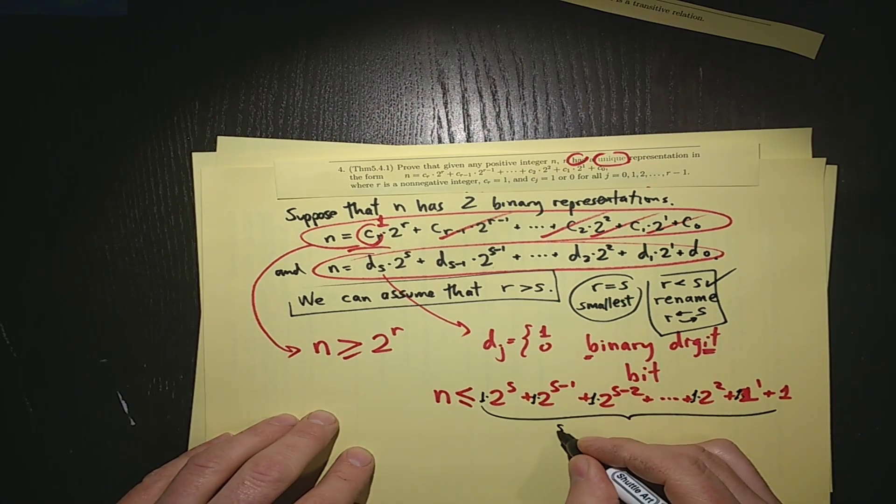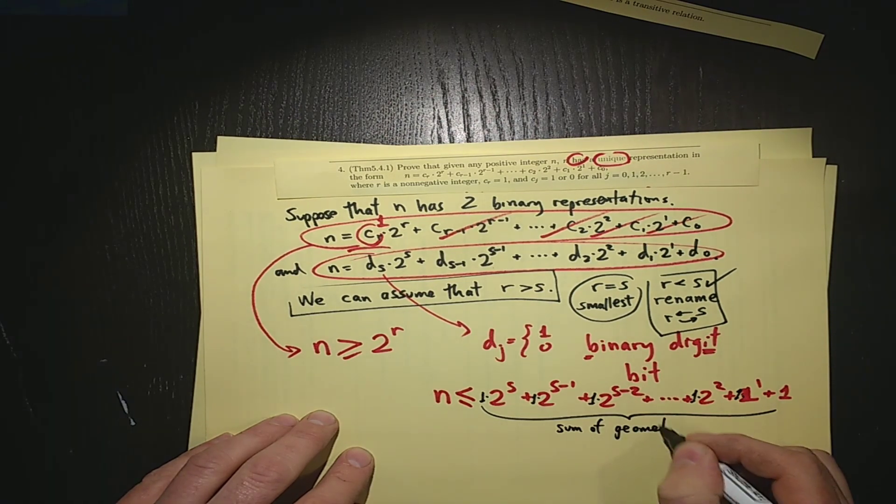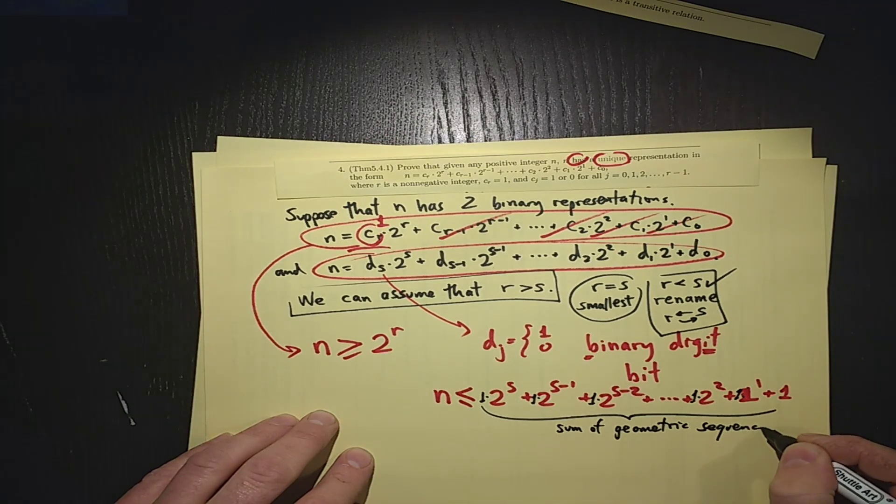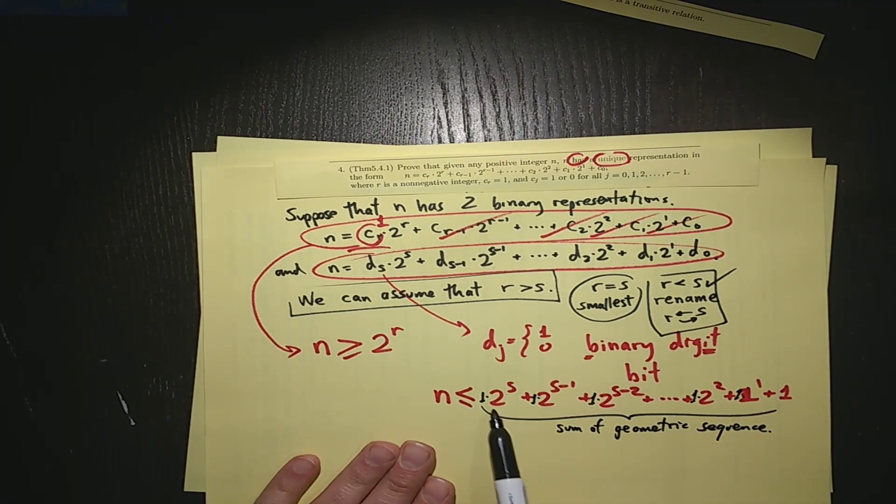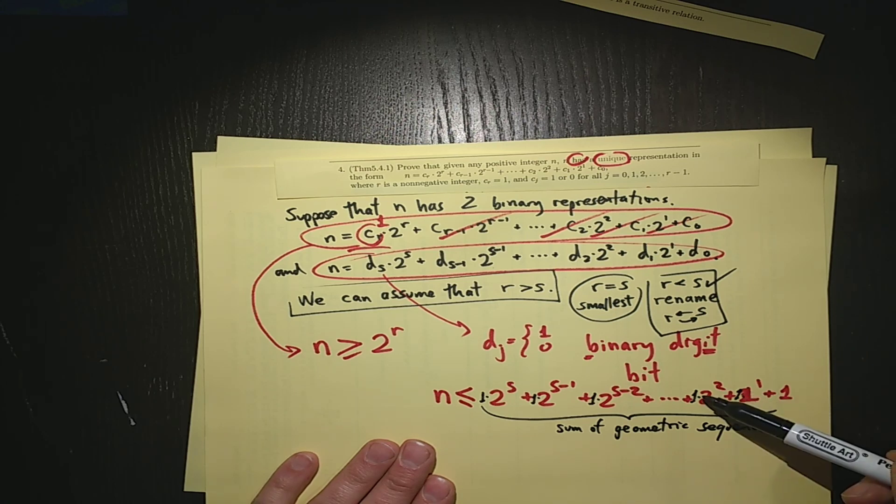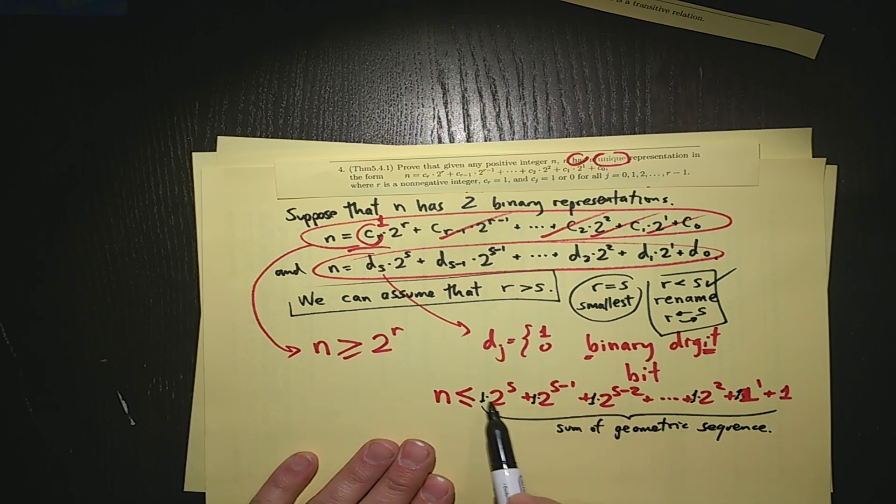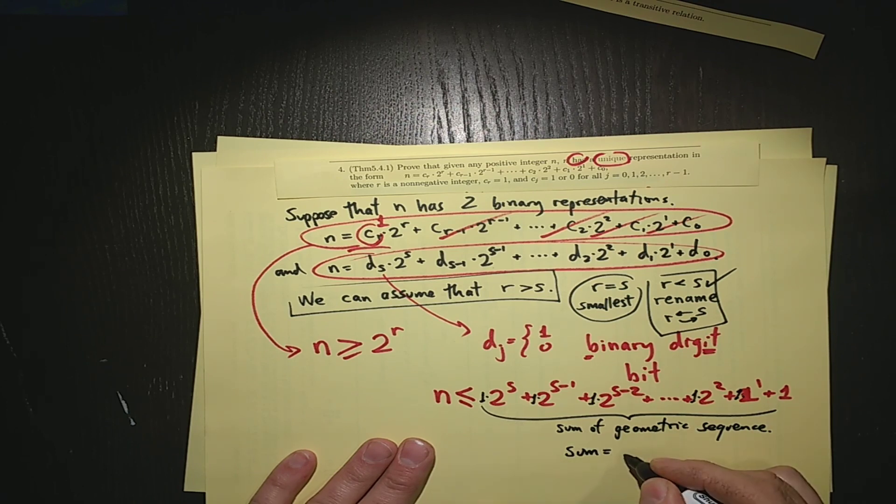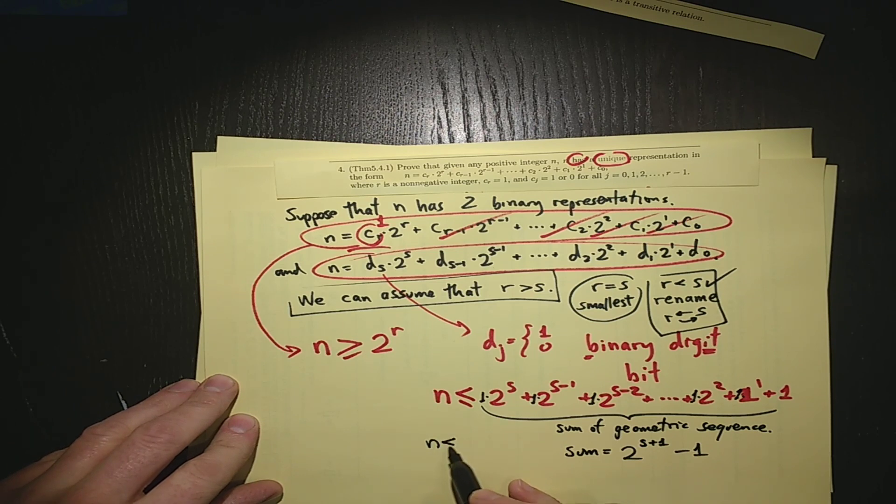But over here, what I have is a sum of a geometric sequence. Do you see that? It's easier to see the other way. We start with one, multiply it by two, multiply it by two. The common ratio is two. If we go in this way, the first term is 2 to the s and the common ratio is one half, but the sum is actually equal to 2 to the s plus 1 minus 1. That's what the sum of a geometric sequence formula gives us in this particular case. So that means that n is less than or equal to 2 to the s plus 1 minus 1, and that means that n is strictly less than 2 to the s plus 1.